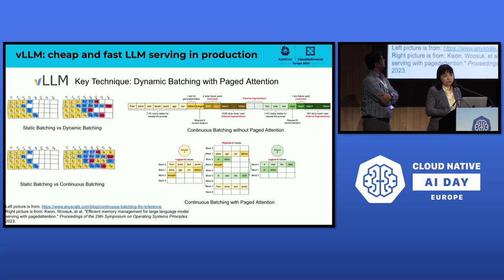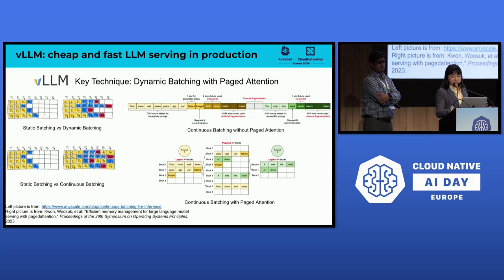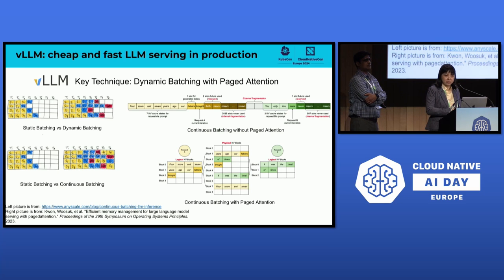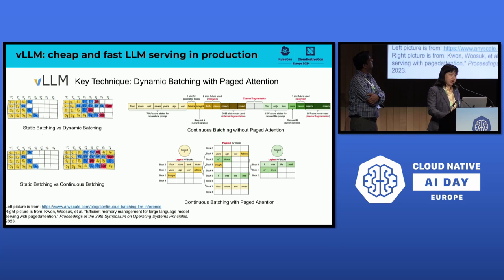The paged attention kernel technique maps the logical blocks of KV cache — which are necessary to generate the next token — to physical KV cache blocks, so you can have more efficient memory utilization and reduce resource fragmentation in memory space allocation.